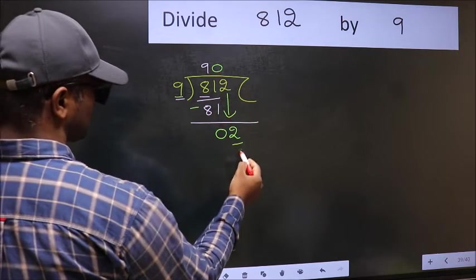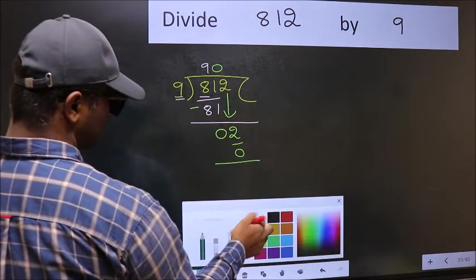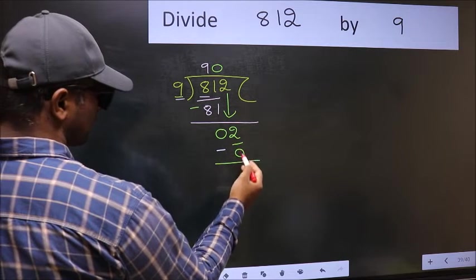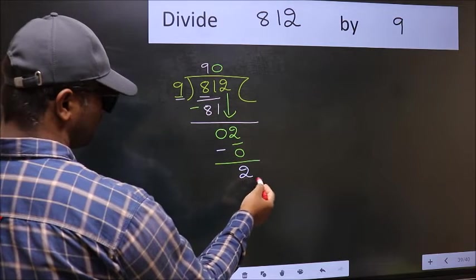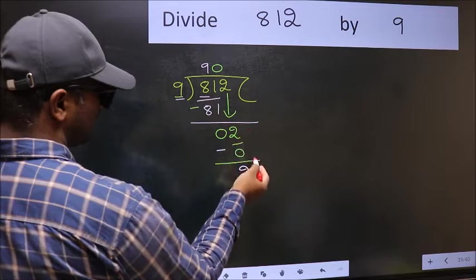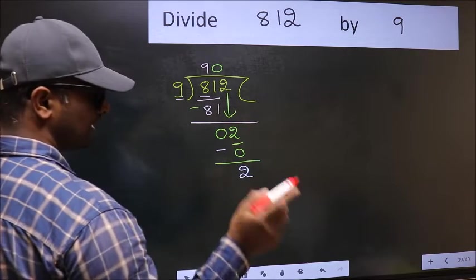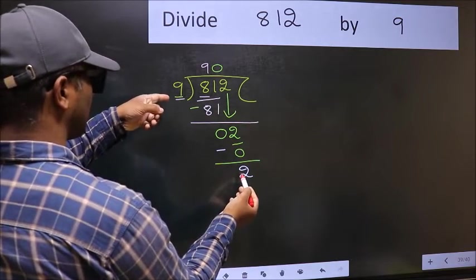So 9 into 0, 0. Now you should subtract. 2 minus 0, 2. Over here, we did not bring any number down. And 2 is smaller than 9.